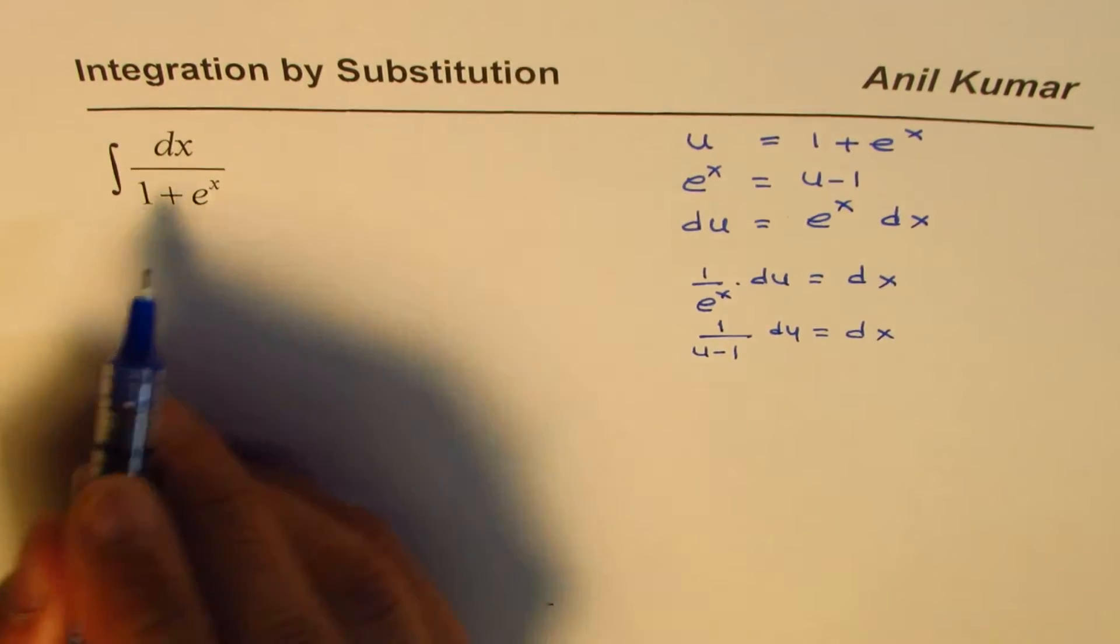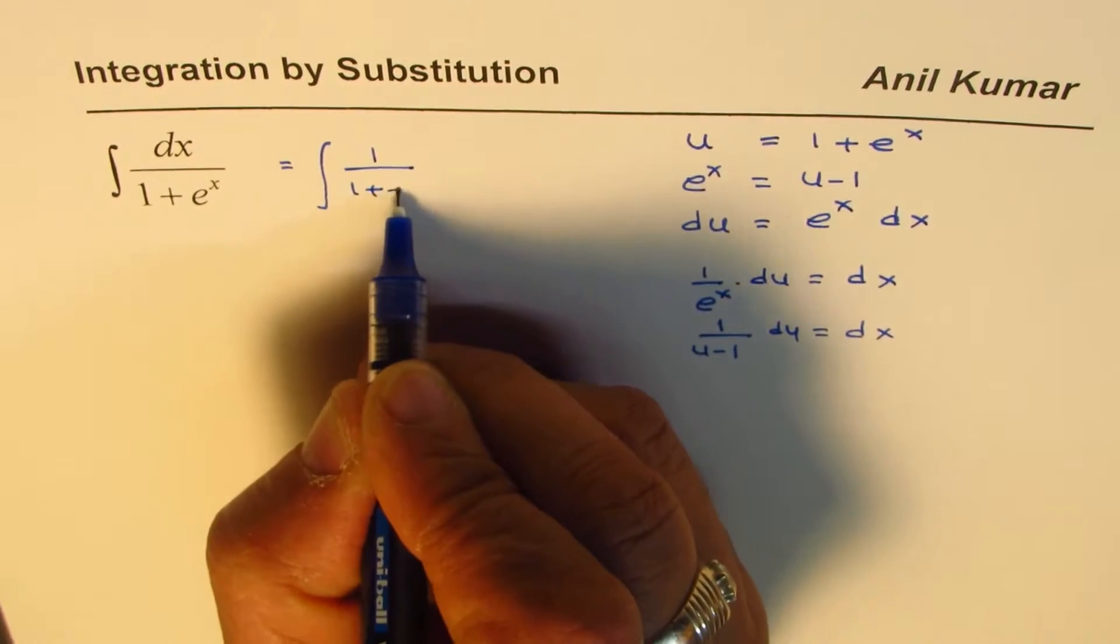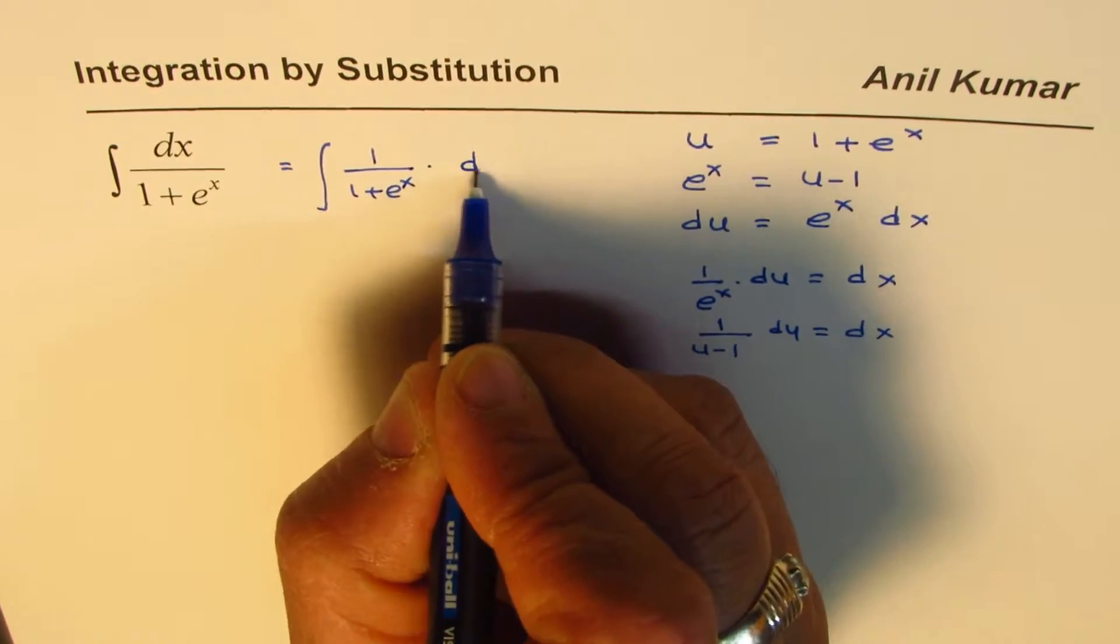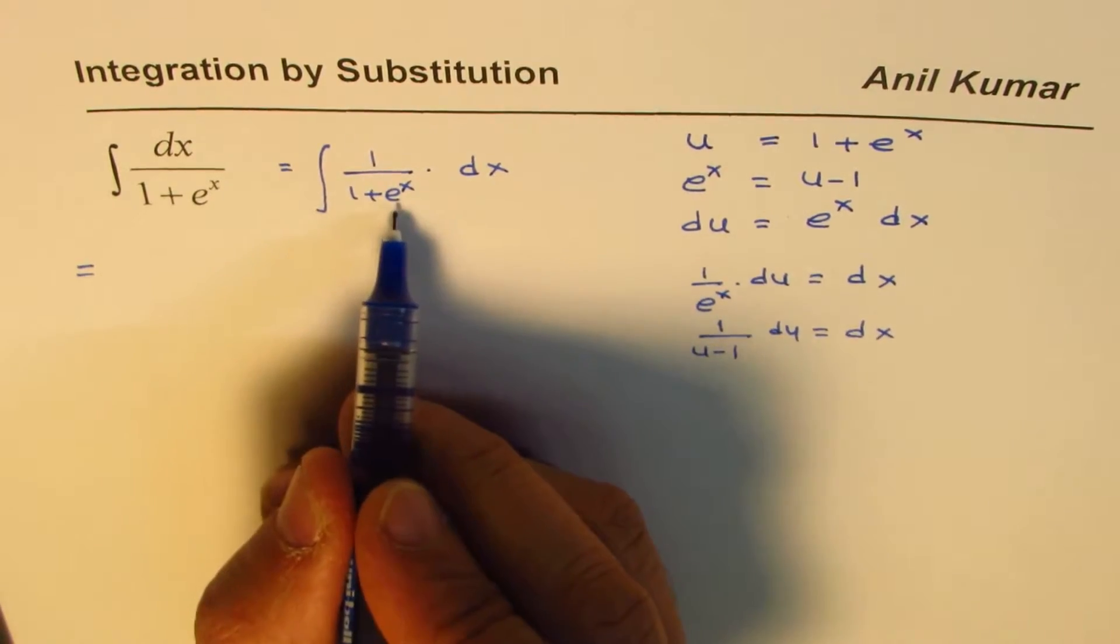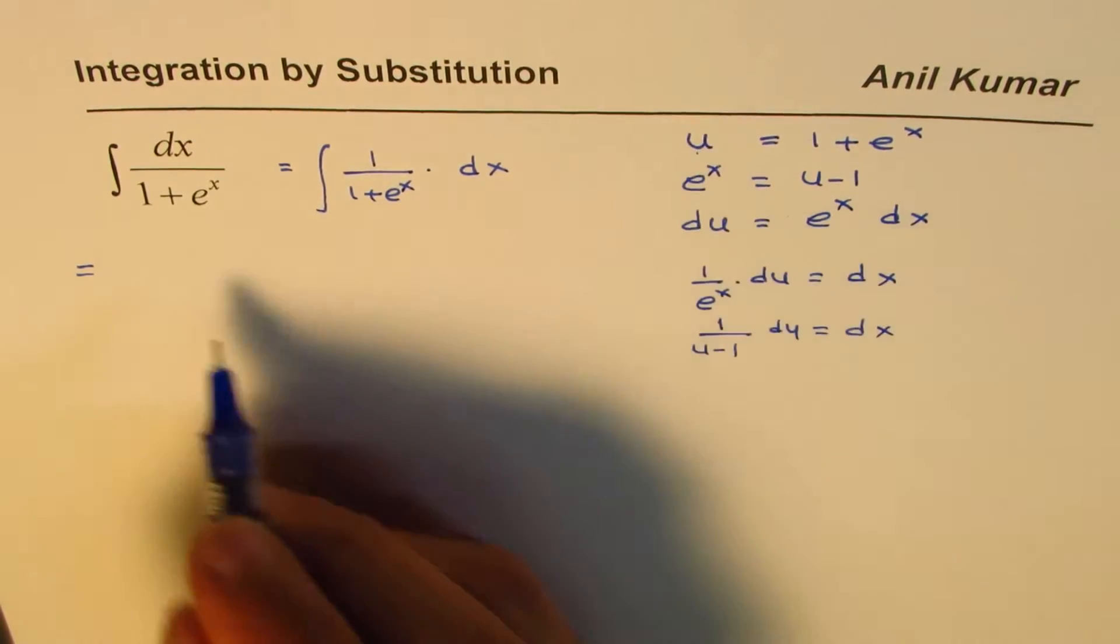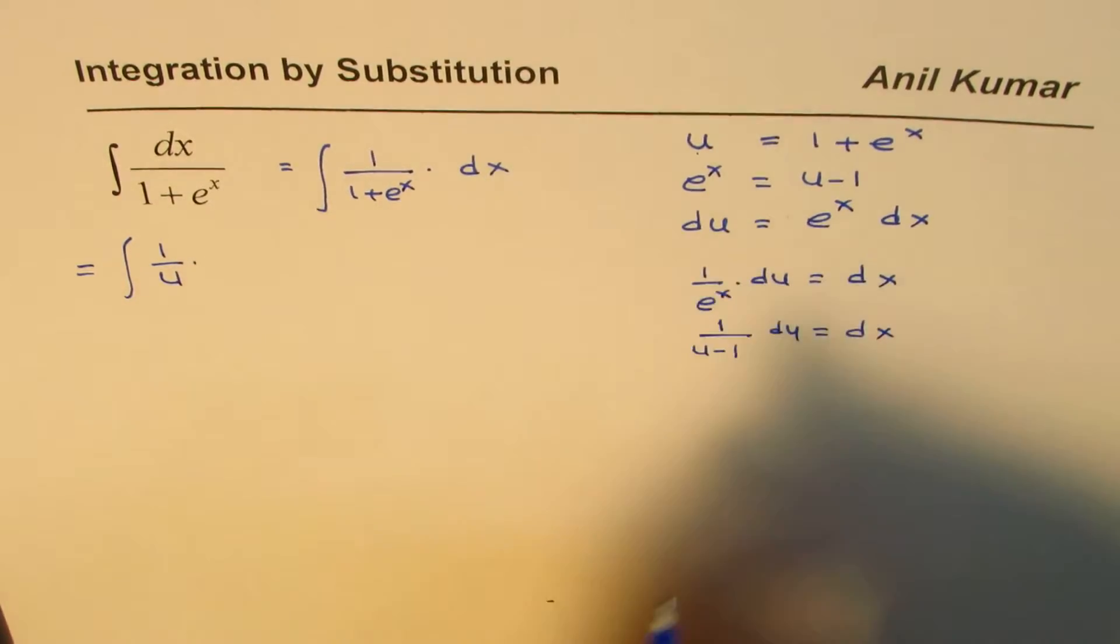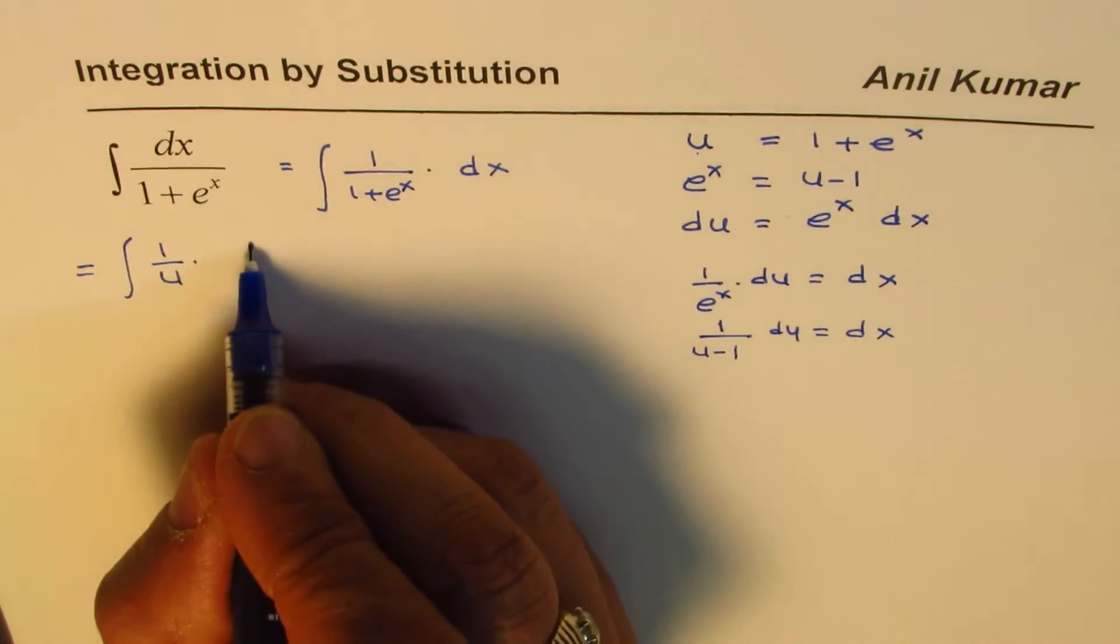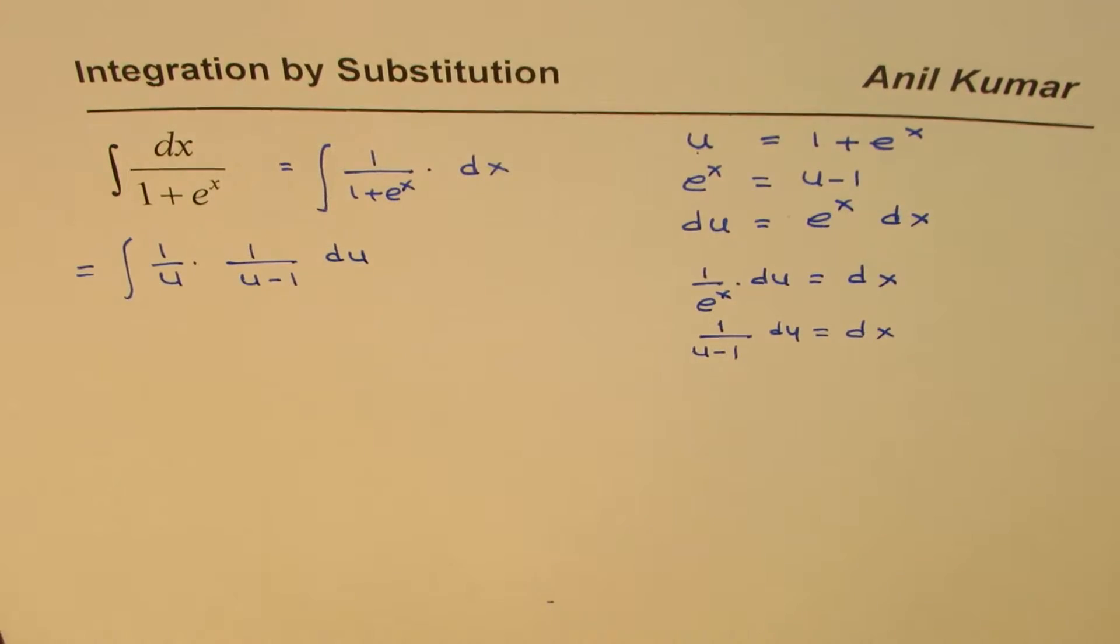So what we have here is integral of 1 over 1 plus e to the power of x dx. Now we'll write this as 1 over u, and dx is 1 over u minus 1 du. Okay, that is what it is, but strictly speaking it doesn't really help us much.